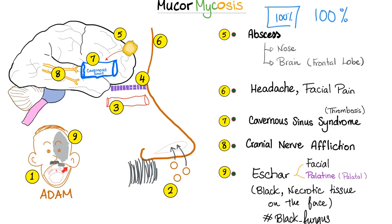In the face, you could get necrotic black tissue - an eschar. Where can the eschar be seen? It could be seen in the face - facial eschar - or it could be seen in the palate, which is the roof of the mouth between the mouth cavity and the nasal cavity. So you look at the patient and say, open your mouth - oh, it's necrotic. That's an eschar on the palate.